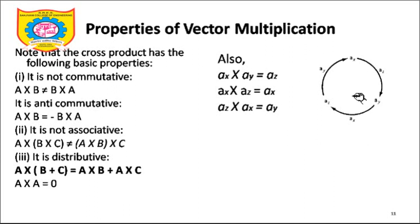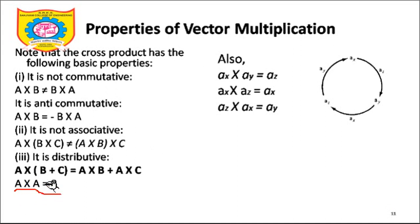We will understand why A̅ cross B̅ is not equal to B̅ cross A̅ by looking at a diagram. It is anti-commutative, meaning A̅ cross B̅ equals minus (B̅ cross A̅). Cross product is also not associative and not distributive. And the last property: cross product between similar entities — whereas A̅ dot A̅ is A squared, A̅ cross A̅ in the cross product will result in zero.